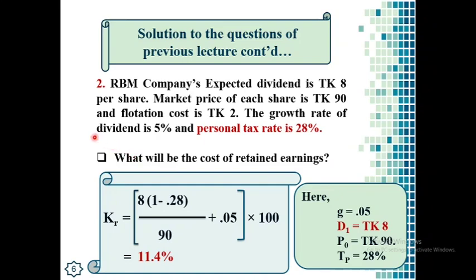The growth rate of dividend is 5% and expected dividend is 8 taka, which is directly given in the question. Market price of the share is 90 taka and personal tax rate is 28%. Putting the values in the formula, we get the answer: 11.4%. The cost of retained earnings of RBM Company is 11.4%. One important note: there is a flotation cost of 2 taka in the question, but we did not adjust it in our calculation, because flotation cost is never adjusted in the case of retained earnings.